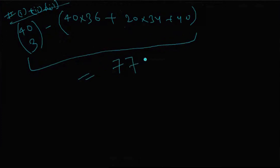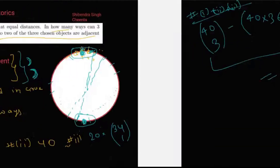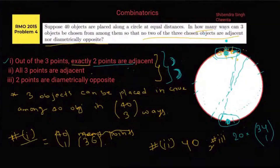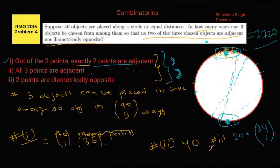On solving, you get 7720. So 7720 is the number of ways in which three objects are to be chosen from among them so that no two of the three chosen objects are adjacent nor diametrically opposite. This is how this problem is solved. Thank you, have a nice day.